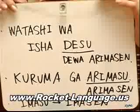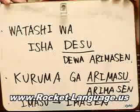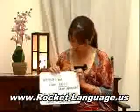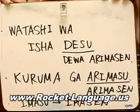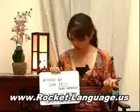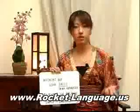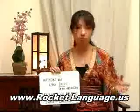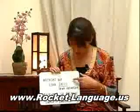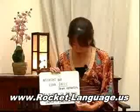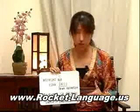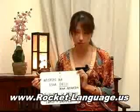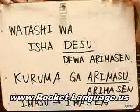The first one: 'Watashi wa isha desu' means 'I am a doctor.' Isha is doctor. In this part, desu changes to dewa arimasen. There are many ways to make a negative sentence, but so far we've learned a speech pattern that ends in desu, arimasu, or imasu. So let's memorize all the form changes. Repeat after me: Watashi wa isha dewa arimasen.